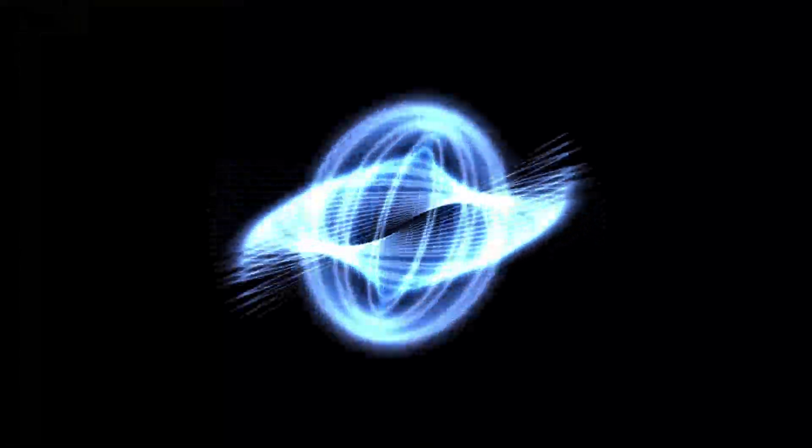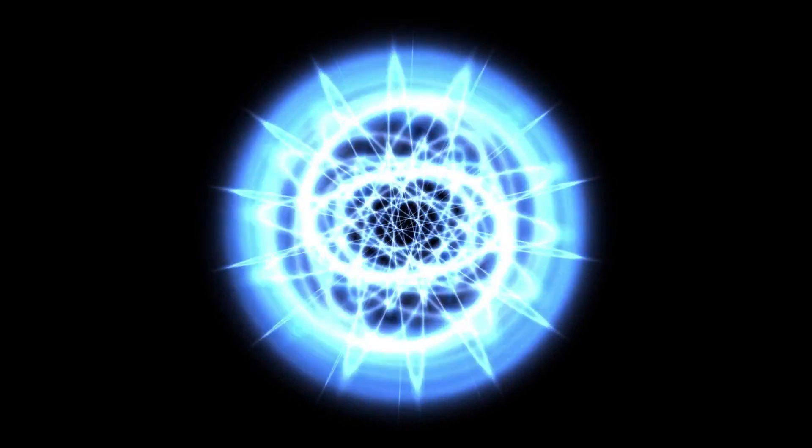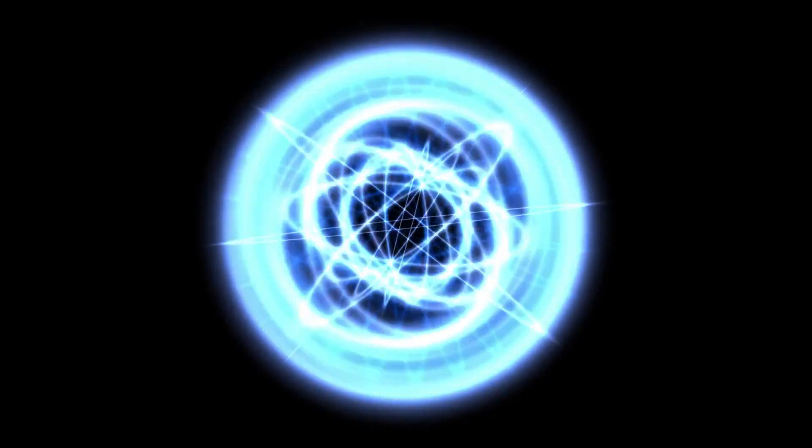The fuzzball theory suggests that the information of matter that falls into a black hole is encoded in the structure of the fuzzball, providing a way for it to be preserved.